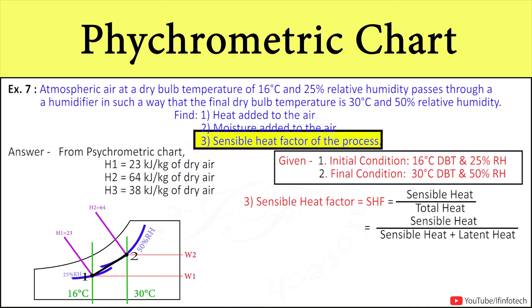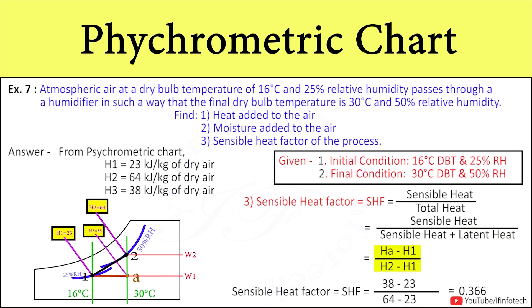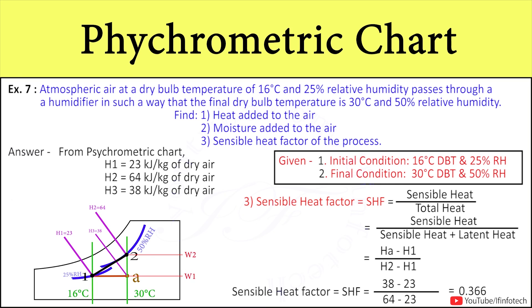To find the sensible heat factor: SHF is the ratio of sensible heat to total heat, where total heat equals sensible heat plus latent heat. The enthalpy difference from point 1 to point A is the sensible heat, and from point 2 to point A is the latent heat. Using h1, h2, and h3 in the formula, we get the sensible heat factor as 0.366. Thank you for watching this video; stay tuned with IF Infotech and subscribe to our channel.